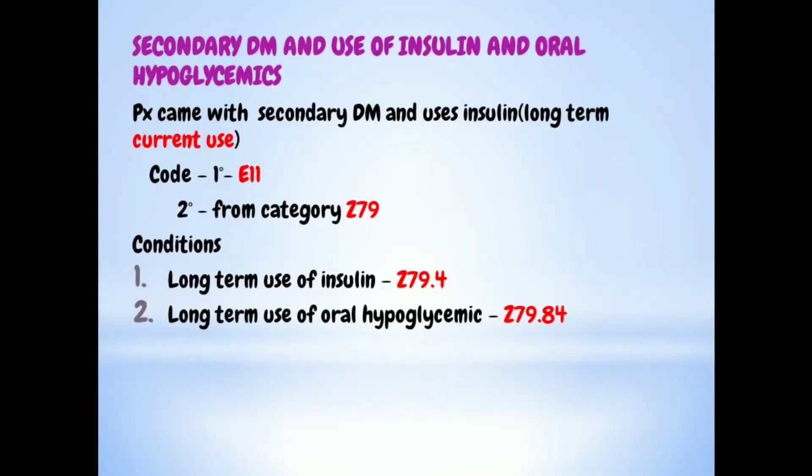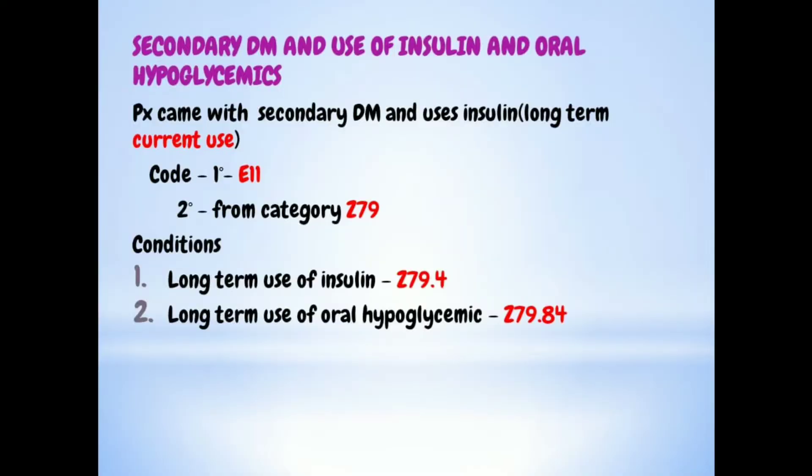For secondary DM and the use of oral hypoglycemics or insulin, the same coding rules apply as for primary DM. The first code is the type of secondary DM, and the second code is from category Z79: Z79.4 for long-term use of insulin, or Z79.84 for long-term use of oral hypoglycemics. There is no change for secondary DM.